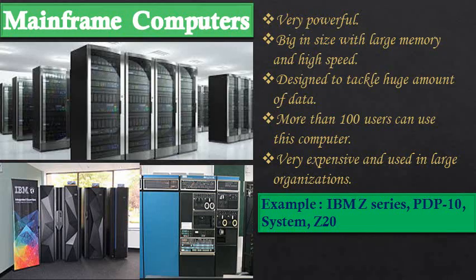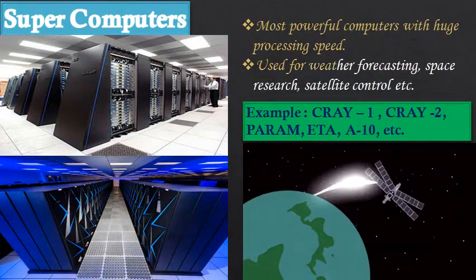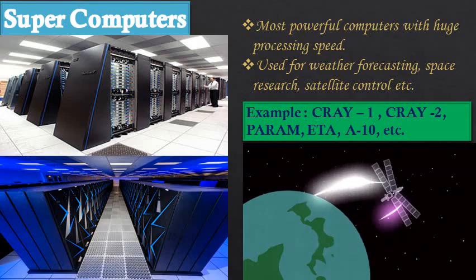Examples of mainframe computers include the IBM series, PDP-10, and System z10. Supercomputers are the most powerful computers with a huge processing speed. They are used for weather forecasting, space research, and satellite control. Examples include Cray-1, Cray-2, Param, and ETA-10.